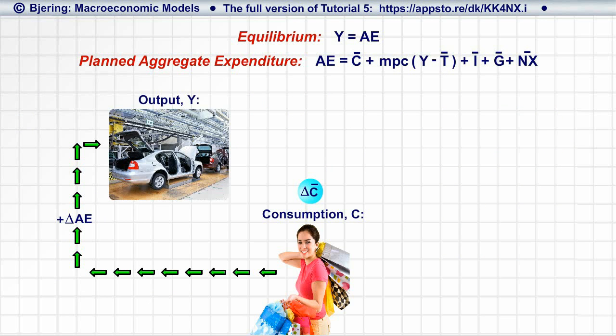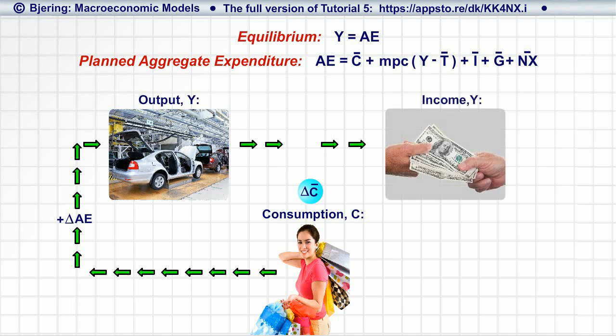And since output is mirrored by income, by an increase in income, by delta Y.